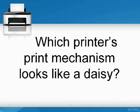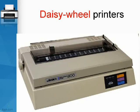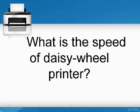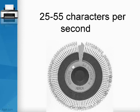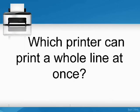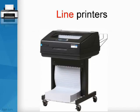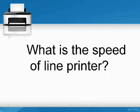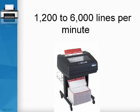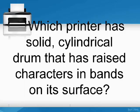The daisy wheel printer's print mechanism looks like a daisy, and its speed is 255 characters per second. Line printers can print a whole line at once, with a speed of 1,200 to 6,000 lines per minute.